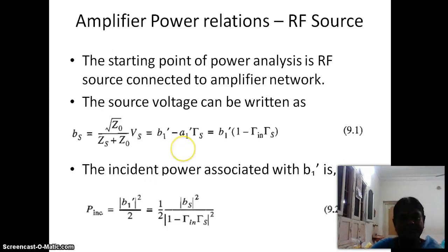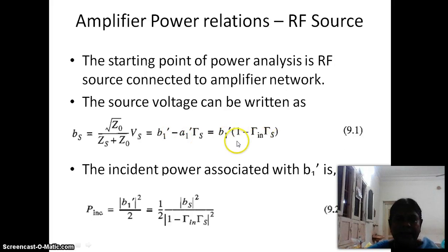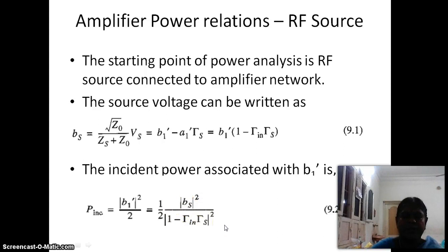From the signal flow graph, Bs equals B1' minus A1' times gamma_S. Also, A1' can be written as gamma_in times B1', so Bs equals B1' times (1 - gamma_in * gamma_S). The incident power associated with B1' is P_incident equal to |B1'|²/2. Therefore, B1' equals Bs / (1 - gamma_in * gamma_S), and P_incident equals (1/2)|Bs|² / |1 - gamma_in * gamma_S|².